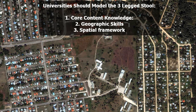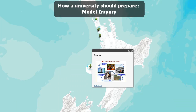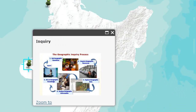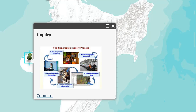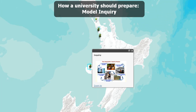Universities should model this three-legged stool: core content knowledge, geographic skills, and the spatial framework. One of the ways they can prepare is to model inquiry — asking a geographic question, acquiring the geographic resources necessary to answer it, exploring the geographic data, analyzing geographic information, and acting on that knowledge. This process oftentimes repeats itself, leading to other questions that start the inquiry cycle all over again.